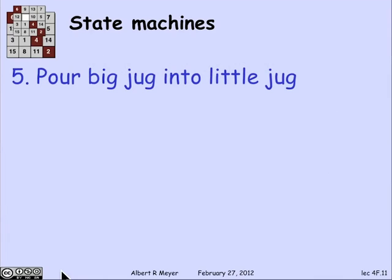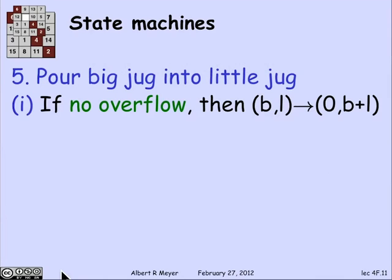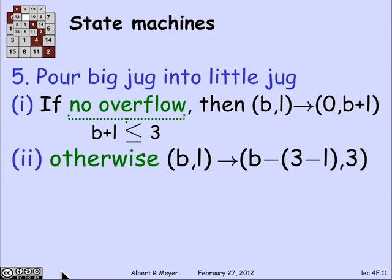A slightly more complicated move is pouring the big jug into the little jug. If there's no overflow — meaning B + L ≤ 3 — then after pouring, there's B + L in the little jug and nothing in the big one. The other case, when B + L won't fit, is that you pour into the little jug: it has L, so you pour in 3 − L to fill it up, and what's left in B is B − (3 − L). That's the overflow case. Similarly, there are moves for pouring the little jug into the big jug.